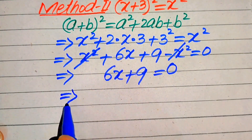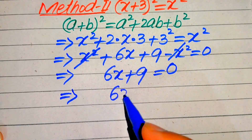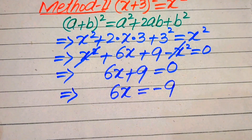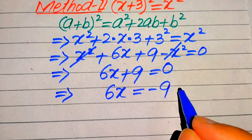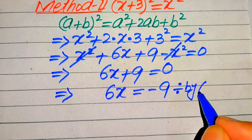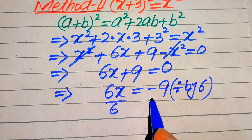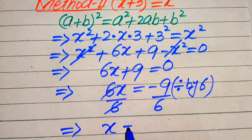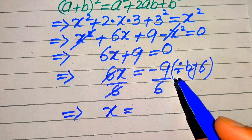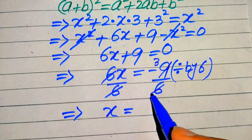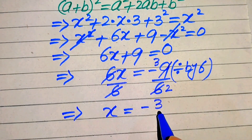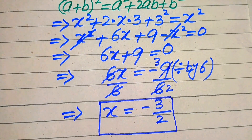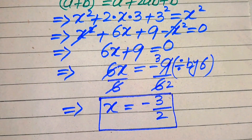In the next step we move +9 to the right hand side, giving 6x = −9. We divide both sides by 6. Cancelling by a factor of 3 — since 3×3 = 9 and 3×2 = 6 — we get x = −3/2. From both methods we obtain the same value of x.